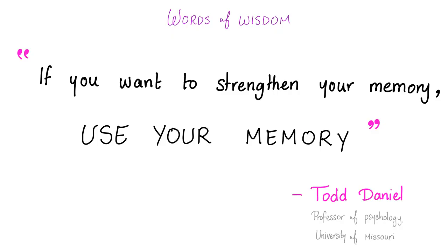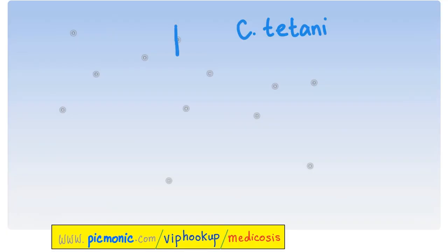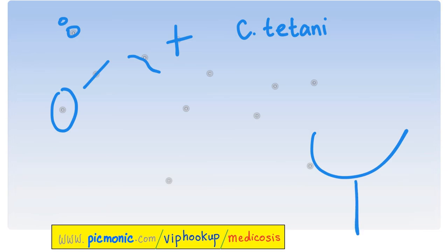To strengthen memory, use active recall. Clostridium tetani is a gram-positive bacillus, an anaerobe, with an exotoxin, and is spore-forming. It affects the Renshaw cell in the spinal cord and inhibits GABA and glycine. GABA and glycine are inhibitory — when you inhibit the inhibitory, you are excitatory — leading to spasm, Risus sardonicus, locked jaw, and opisthotonus, which is severe hyperextension.